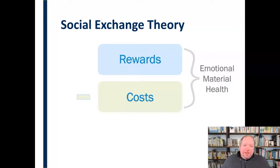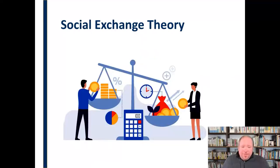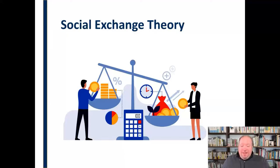We balance all that out — we take the rewards, subtract the costs, and that essentially gives us the outcome. If the rewards outweigh the costs, we're likely to form or maintain that relationship. Whether we consciously think about it or not, we're really balancing all these things out in our mind, asking: what am I getting out of this, and what's it costing me?